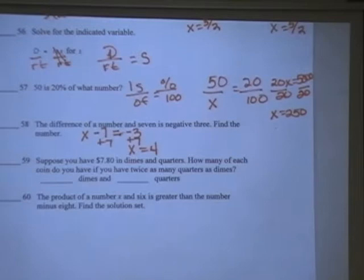Number 59 asks us to suppose you have $7.80 in dimes and quarters. How many of each coin do you have if you have twice as many quarters as dimes? I do not have enough room to work that out here.